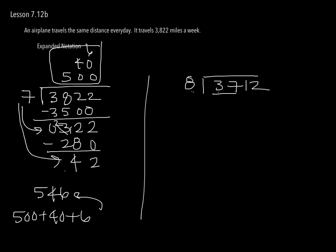So 8 in a 37, well, 8 times 5 is 40. So that's going to be too big. So it's going to have to be 4, and we're going to fill in 400. 8 times 400 is going to be 3,200. And now I'm going to subtract 2, 1, 5, 0.